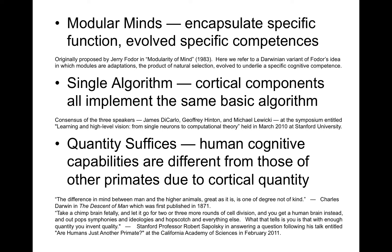Jerry Fodor states that modular systems must fulfill certain properties. These include domain specificity — that specialized modules only operate on certain kinds of inputs — and informational encapsulation, that modules don't refer to other modules in order to operate. These will turn out to be too restrictive to apply to most cortical functions, and we'll end up relaxing Fodor's notion of modularity. The idea that the cortex runs many instances of the same basic algorithm — what I like to call algorithmic parsimony — seemed quite reasonable to a number of the more computationally oriented neuroscientists at a symposium held in Stanford's Clark Center in 2010.